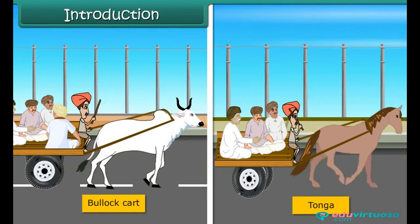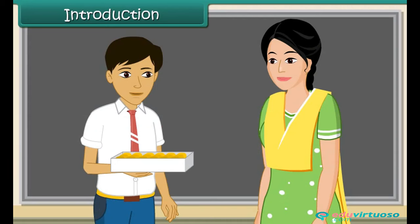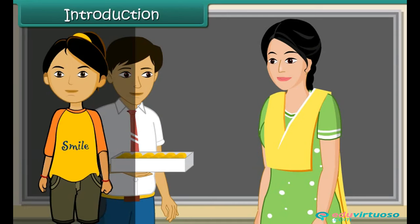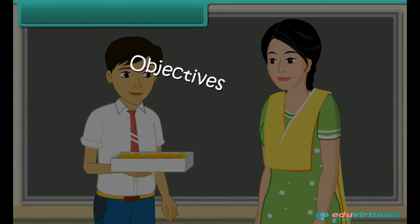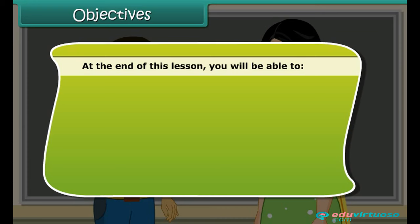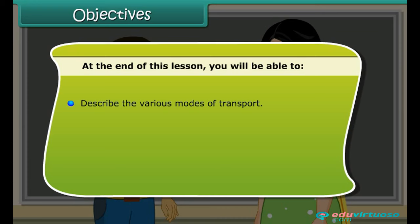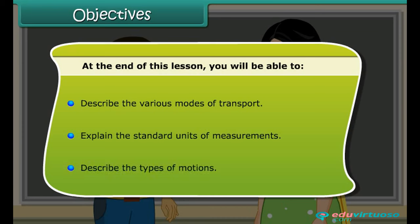Bullock carts and tongas. Good. Let us look at some modes of transport used in the early days. Children, in this lesson, we will learn about the various modes of transport and also about the measurement of distance along with the types of motions. At the end of this lesson, you will be able to describe the various modes of transport, explain the standard units of measurements, and describe the types of motions.